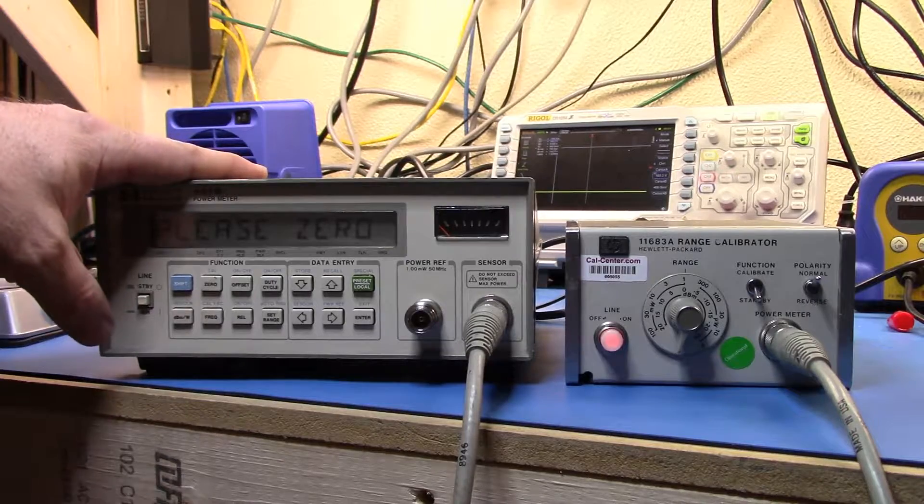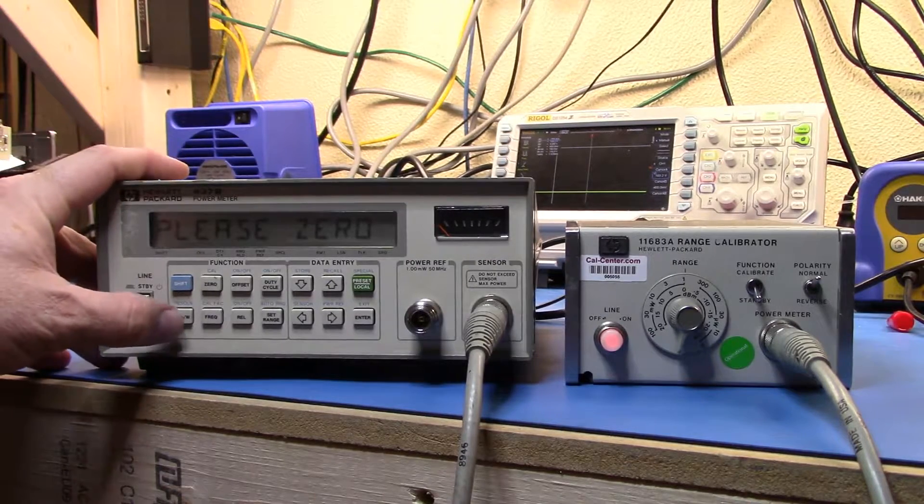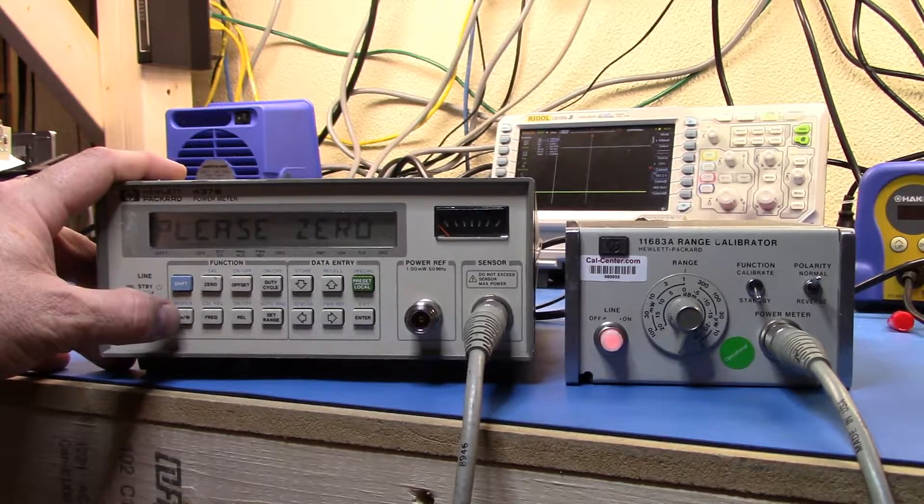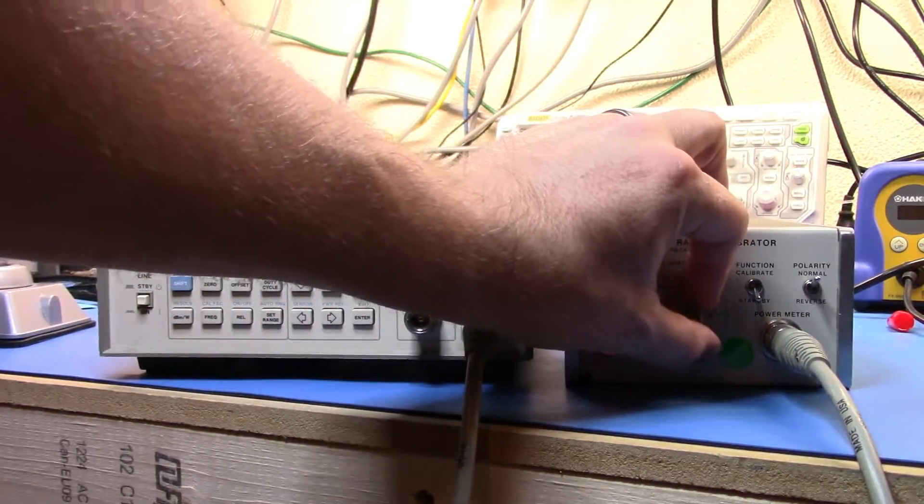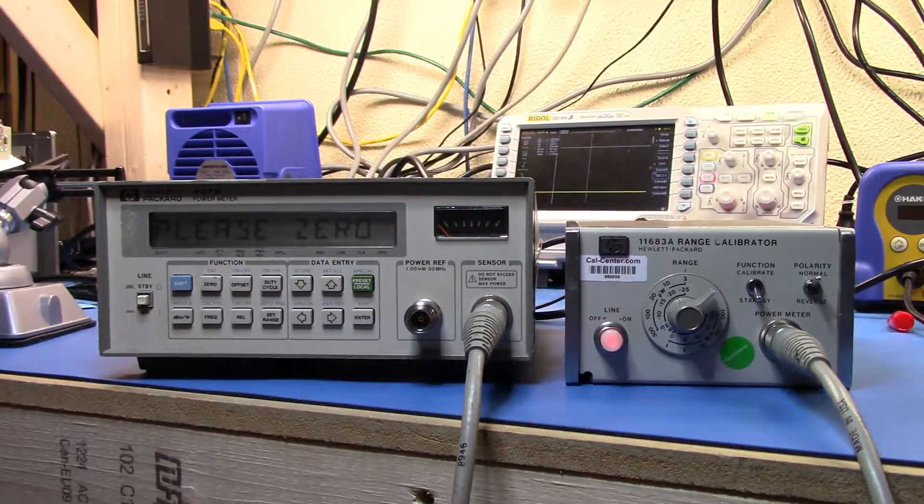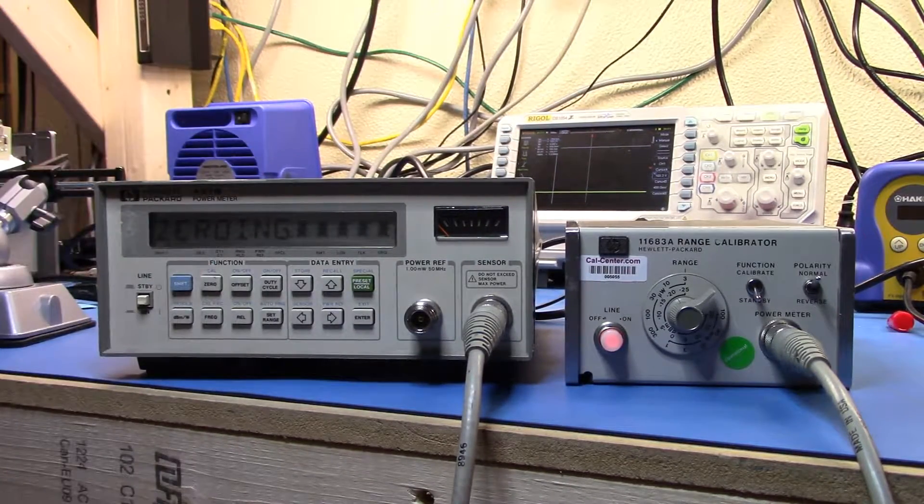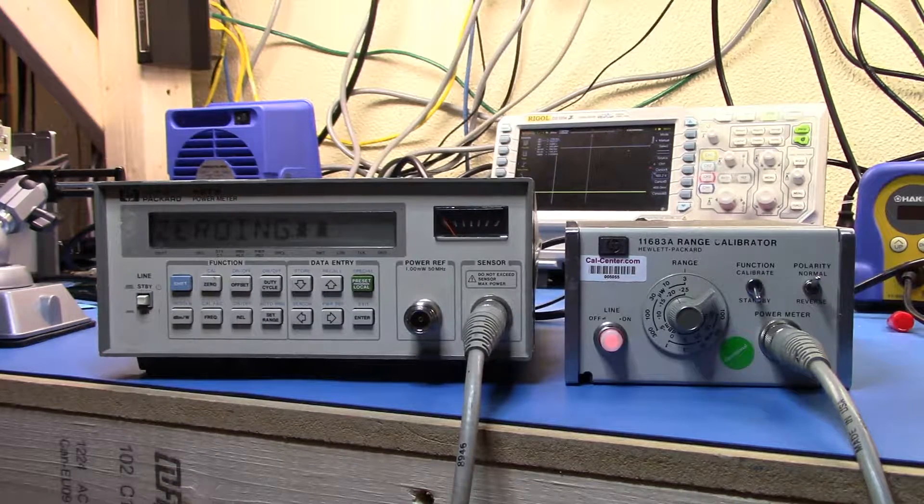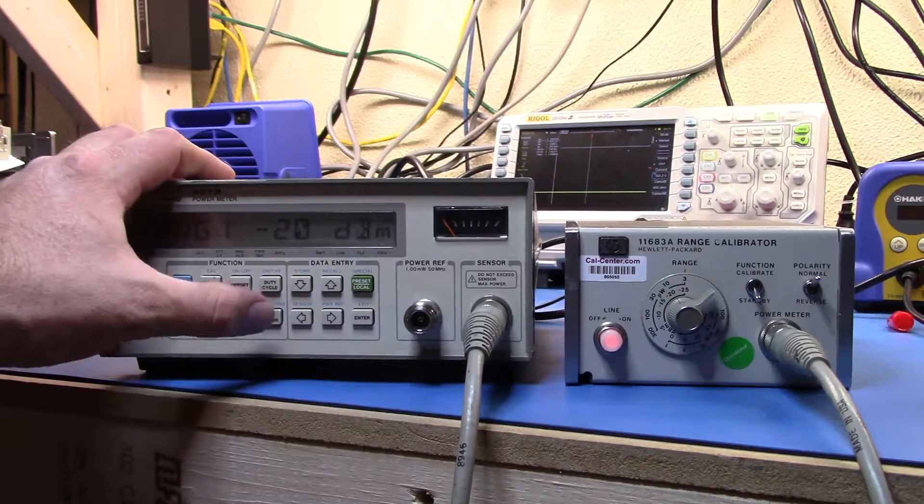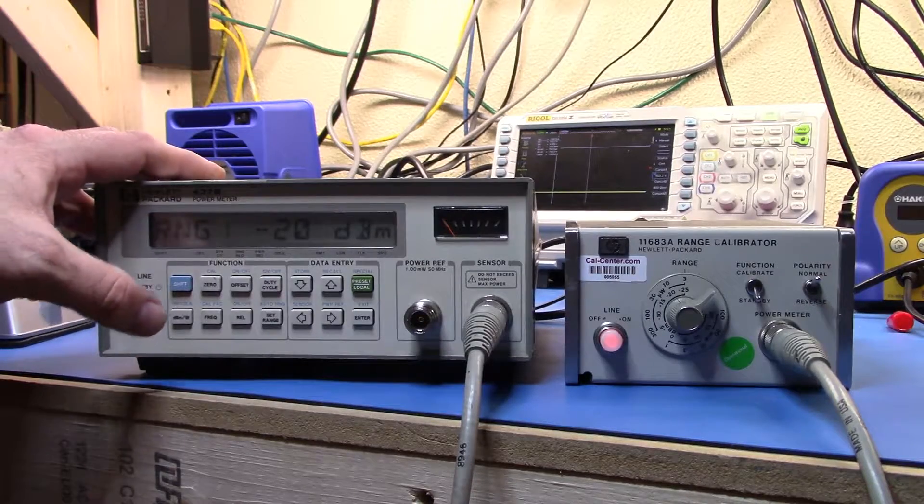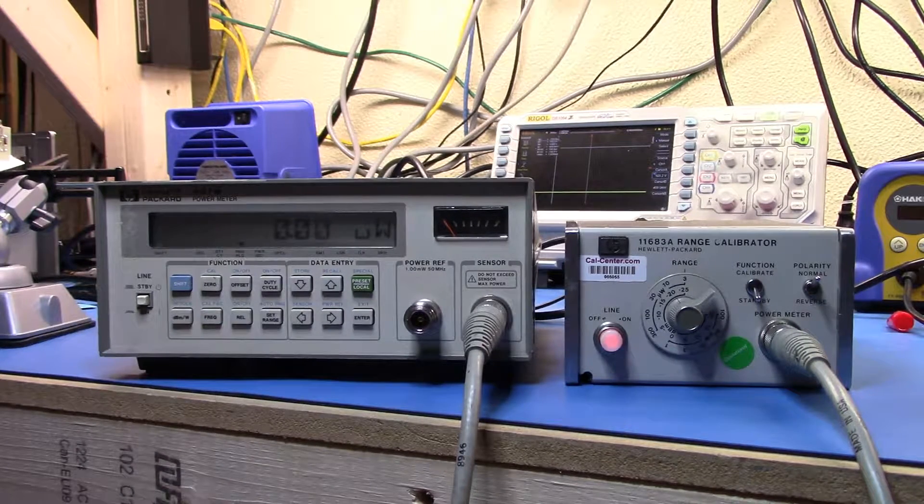So we turn the meter on, we set preset local so we preset the unit and we set it for dB milliwatts. The range calibrator we set to 3 to the 3 microwatt range, we make sure it's on standby, it's turned on and then we press the power meter zero key.